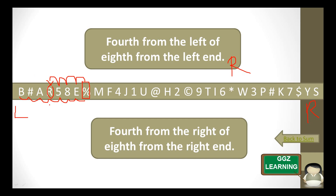We can see that we are moving forward and then moving backward. The shortcut is: if both directions given are the same side — both left — we subtract the two numbers. So 8 minus 4 equals 4. We just move 4 elements from the left side. The 4th element from the left is 1, 2, 3, 4 — so R is the 4th element from the left side.